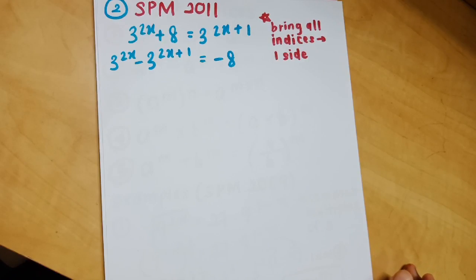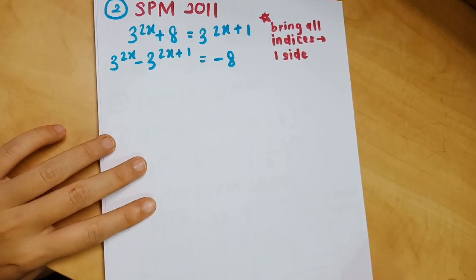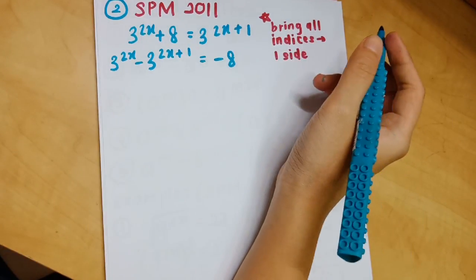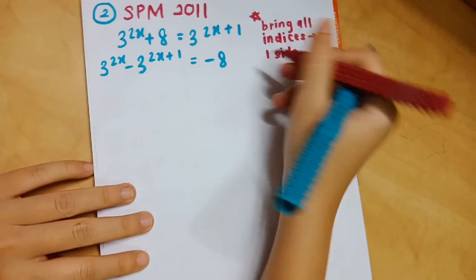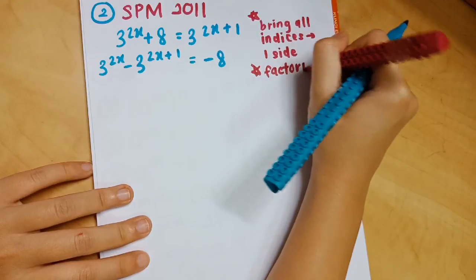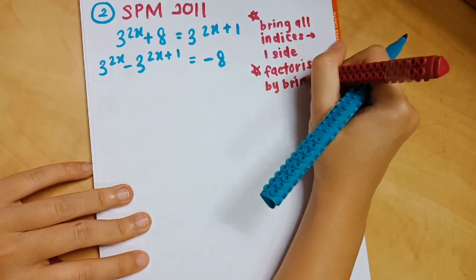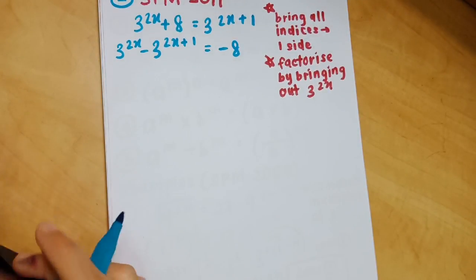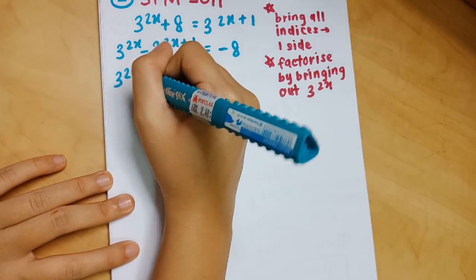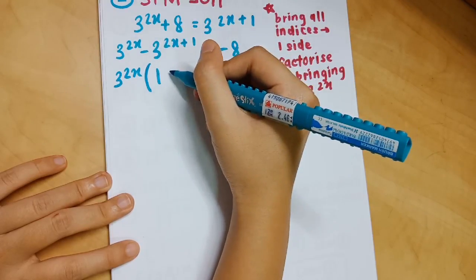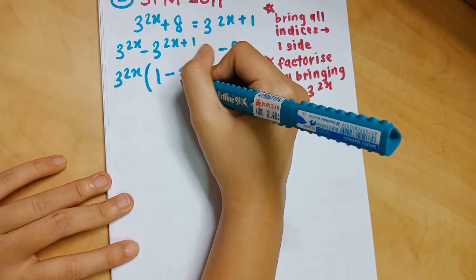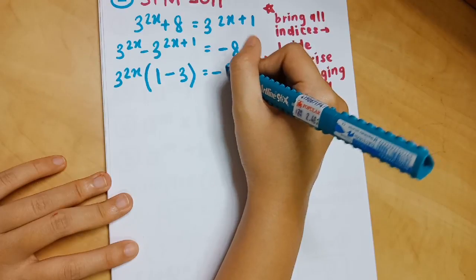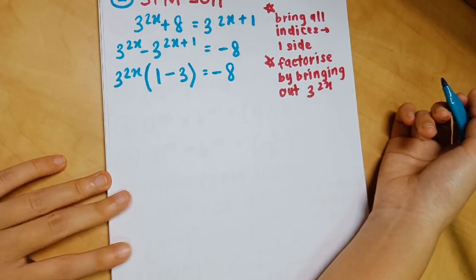Next, identify the common factor in the equation, which is 3^(2x). Factorize by bringing out 3^(2x), leaving 1 inside the bracket from the first term and 3^1 = 3 from the second term. So you have 3^(2x)(1 − 3) = −8, and you solve 1 − 3 first.